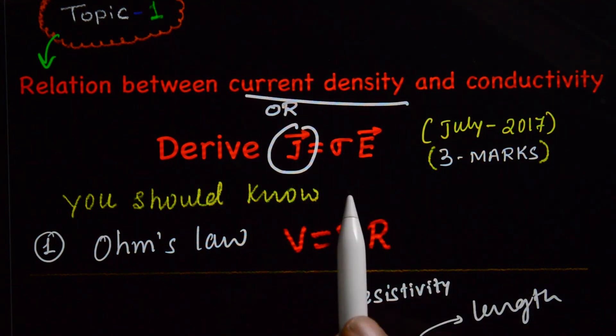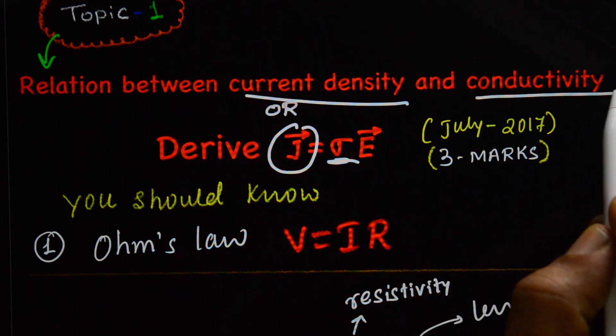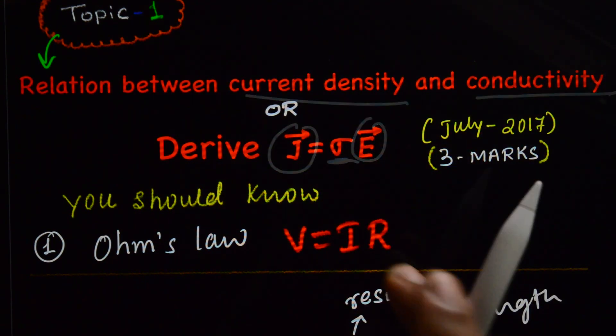J is current density, sigma is conductivity, E is electric field.